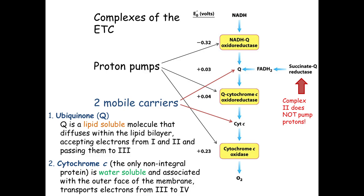Reviewing the pathway: NADH donates to Complex I, also called NADH:Q oxidoreductase. The naming scheme is straightforward — you name the molecule being oxidized, then the molecule being reduced, then add 'oxidoreductase.' Complex I gets electrons from NADH and gives them to Q, so: NADH:Q oxidoreductase. You're oxidizing the NADH and reducing the Q.